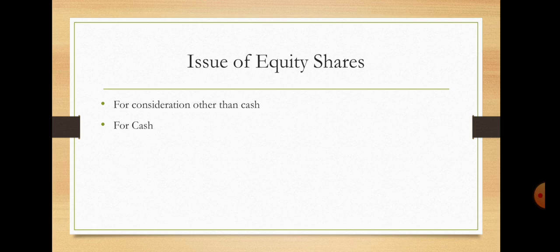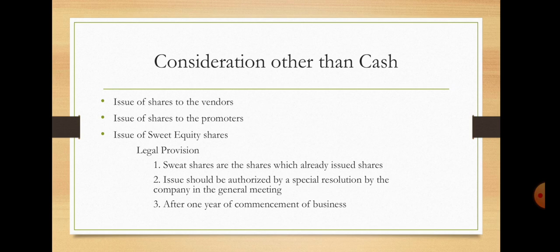The equity shares may be issued for two reasons: one, for consideration other than cash, and second, for cash. For consideration other than cash, the company may issue its shares to vendors or promoters. Regarding sweat equity shares, these must be already issued shares and must be authorized by the board of directors in a general meeting. After one year of commencement of business only, the company will issue sweat equity shares.